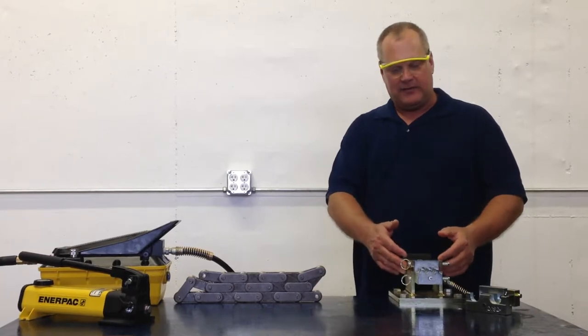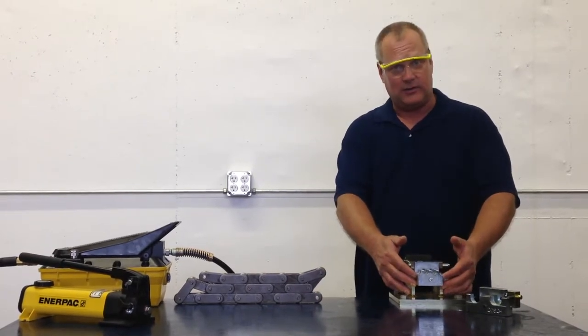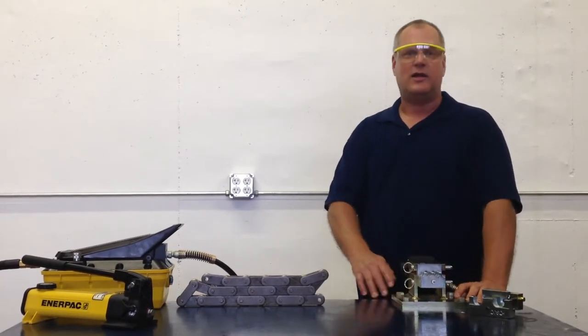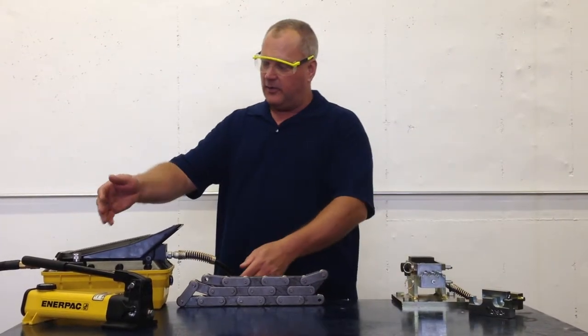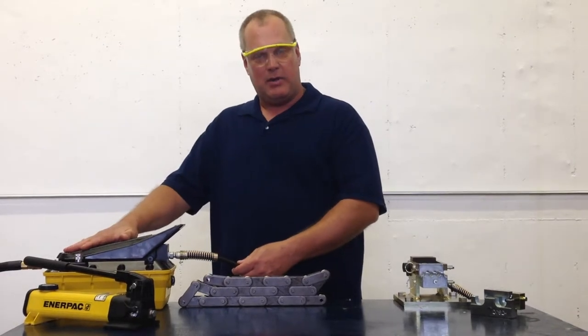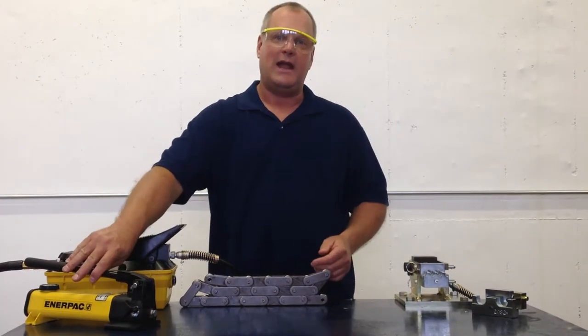It uses the same base and the same die sets as the regular Easybreaker. It will cut 25 through 80 heavy size chain and it can be powered with either an aerohydraulic pump or a hand pump.